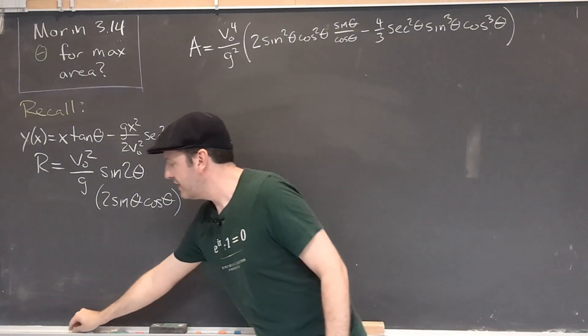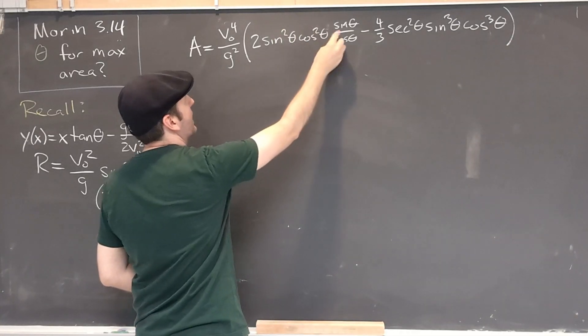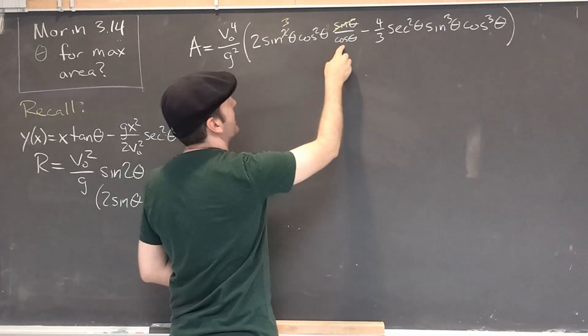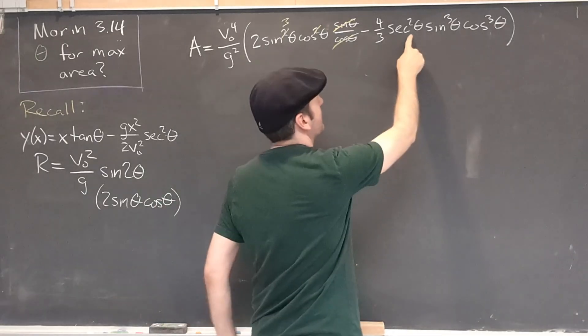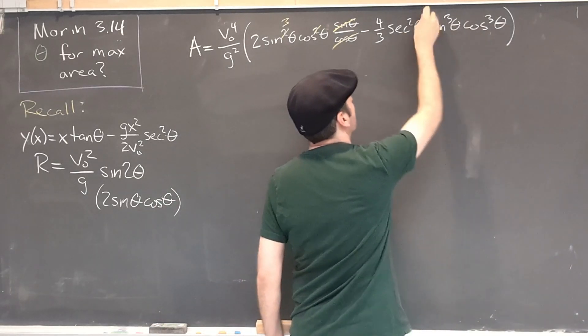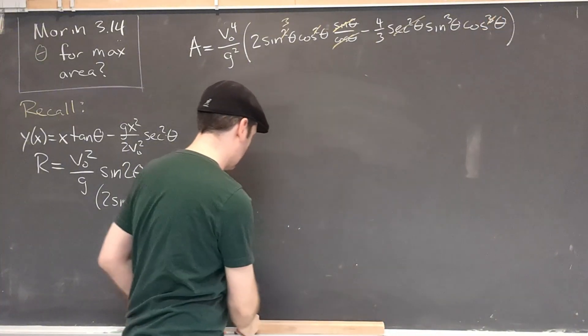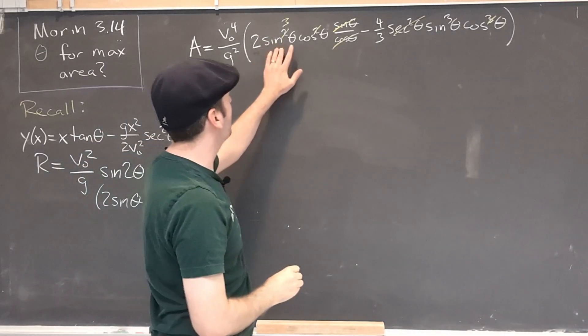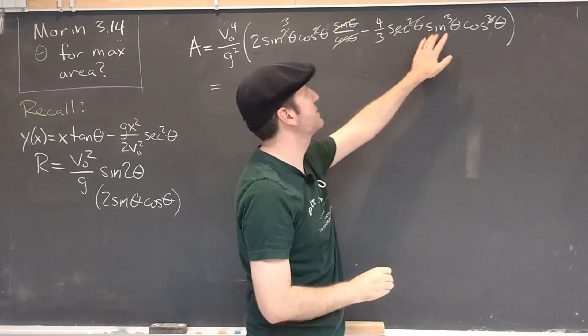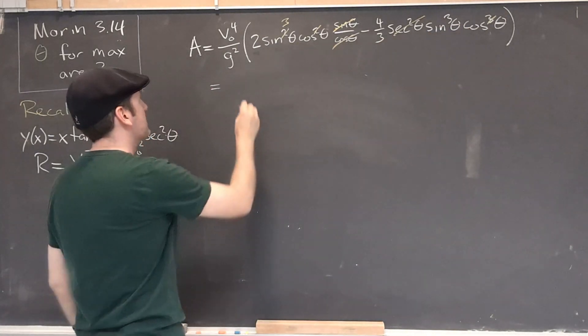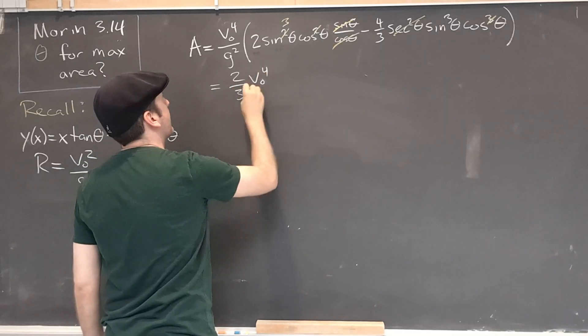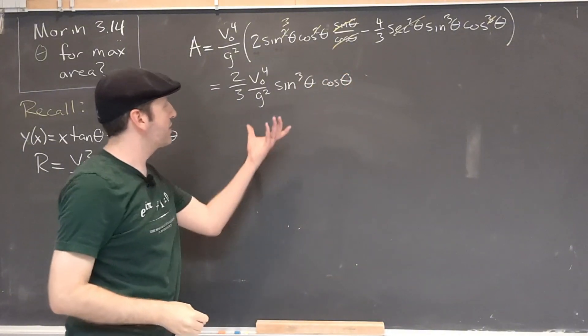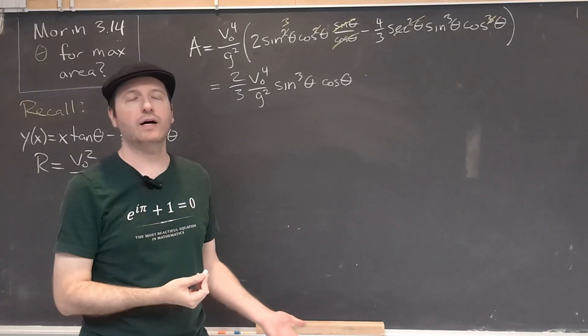We can do one last bit of simplification here by noting that this sine and this sine become a sine cubed. This cosine squared and this cosine just become a cosine. Similarly, over here, this secant squared and this cosine cubed give us just a cosine with a sine cubed. So we end up actually having two common terms that we can bring together. 2 sine cubed cosine minus 4 thirds sine cubed cosine, 2 minus 4 thirds is 2 thirds. And that's our nice compact expression for the area under this curve.